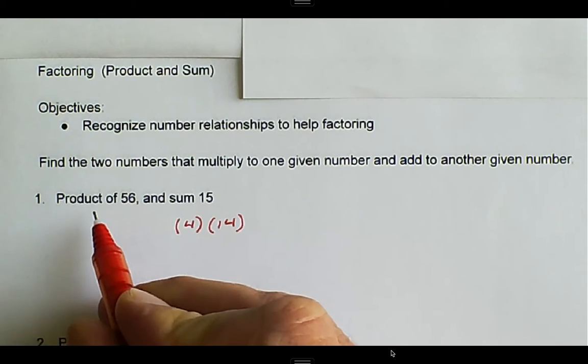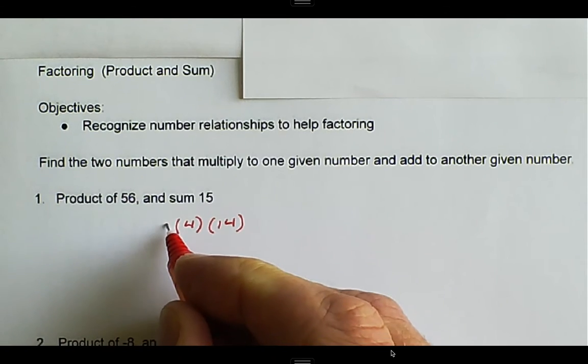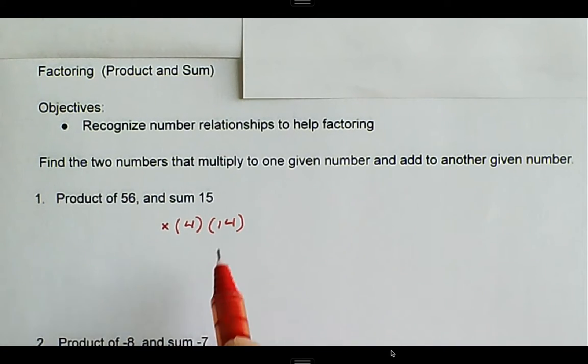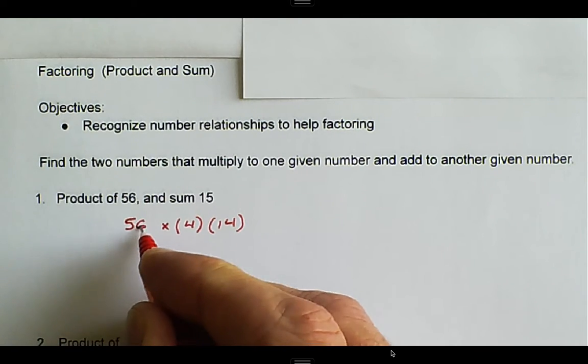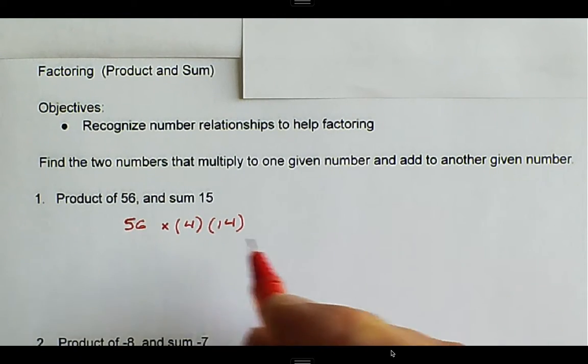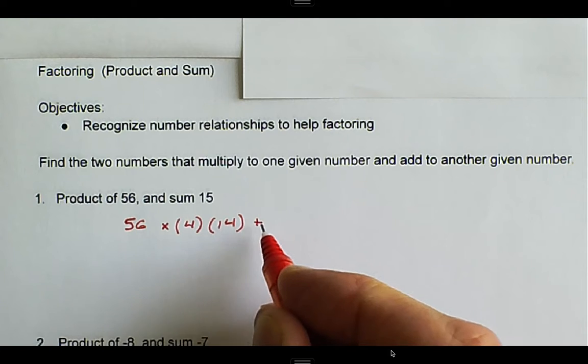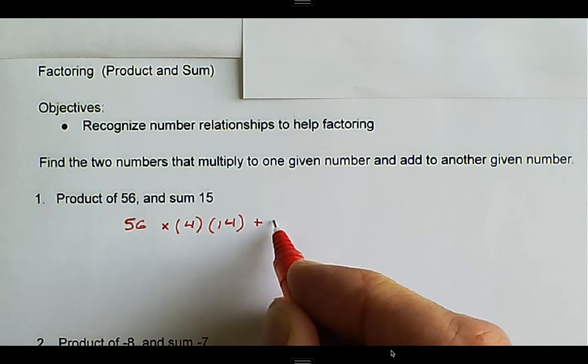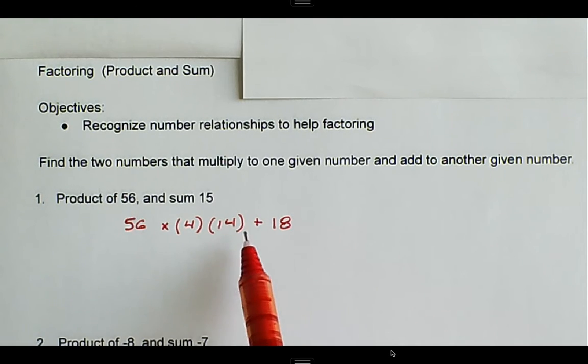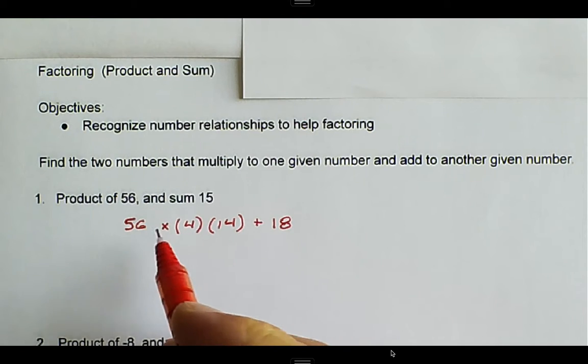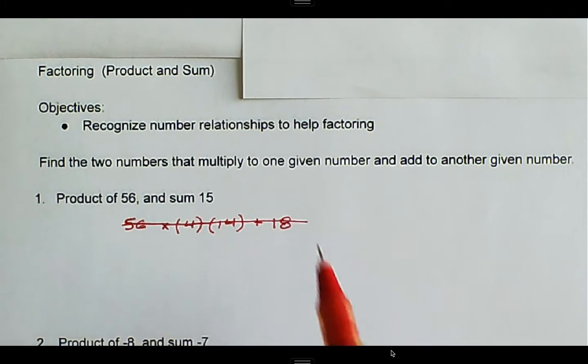Two numbers that we could check is 4 and 14. We have to check for the product, which is multiplication. 4 times 14 is 56. And when we add these two together, 4 plus 14 is 18. Although we did find two numbers that multiply together to become 56, they don't add together to be 15. This pattern doesn't work.